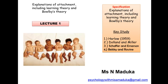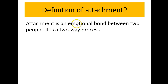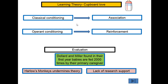Welcome to lecture one of developmental psychology. We're going to be looking at explaining how attachments form. You need to know the definition of attachment. You need to understand that it is an emotional bond and it has to be a two-way process. For example, you cannot get attached to your teddy bear because a teddy bear cannot reciprocate. Those two bits are at least the minimum of what the definition is.